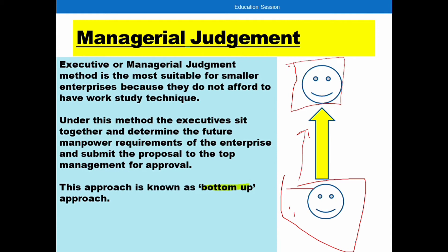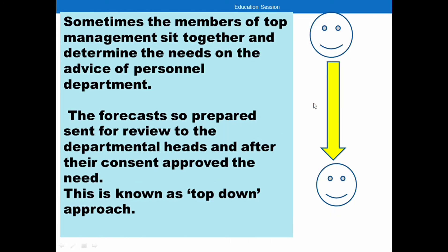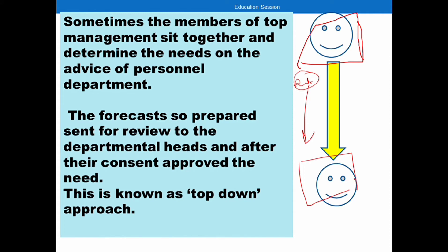The bottom-up approach starts from the bottom — line managers and executives identify needs and pass them upward. The top-down approach starts from top managers, who focus on the overall organization's needs and overall HR demand, prepare a report, and then transfer it down to their line executives and departmental heads who review it and execute it. This is called the top-down approach.